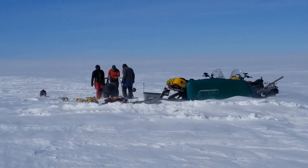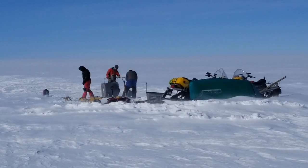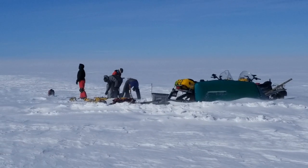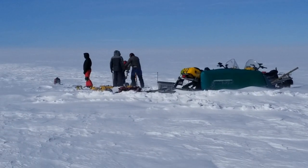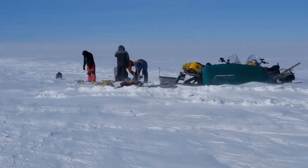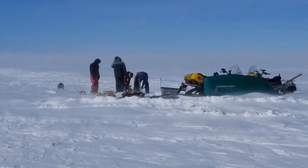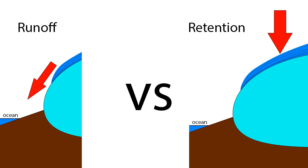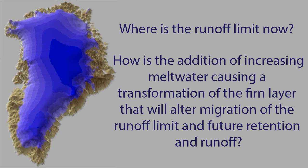We have observations and models that provide detailed information about the location, timing, and the amount of surface melt across the ice sheet, but we lack a sufficient understanding of the fate of meltwater in the percolation zone. We don't know how much meltwater runs off into the ocean and how much seeps into open pore space in the firn layer and is retained on the ice sheet. This uncertainty generates two major questions that require scientific research to answer in order to improve projections of sea level rise.